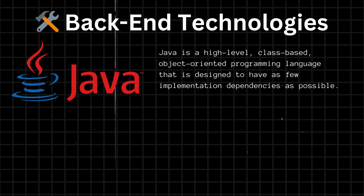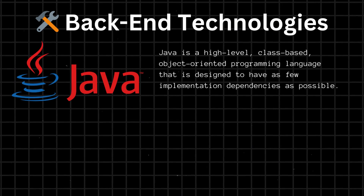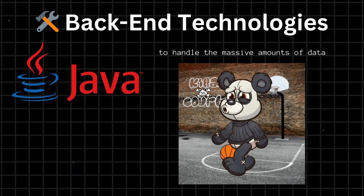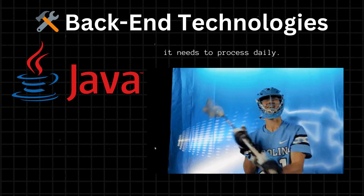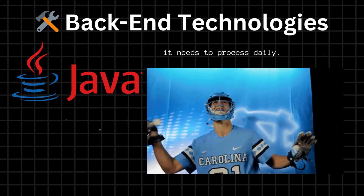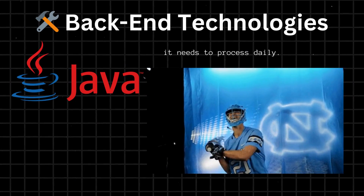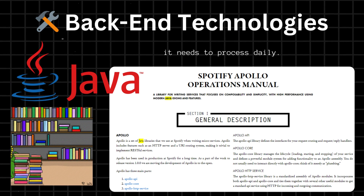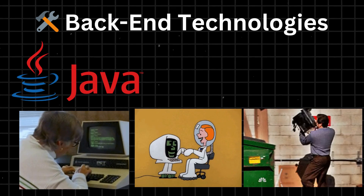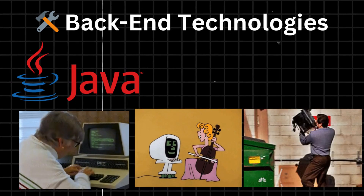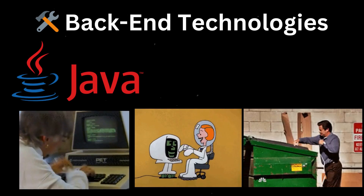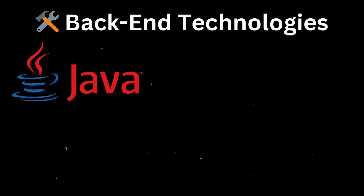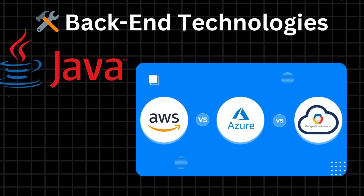Back-end Technologies: Java. Spotify's back-end is primarily built using Java, allowing the company to handle the massive amounts of data it needs to process daily. Java provides many libraries and tools for building and managing complex systems. Java's ability to run on multiple operating systems also makes it easier for Spotify to deploy its back-end on a wide range of hardware and infrastructure, including cloud-based systems.